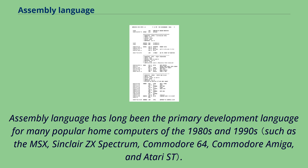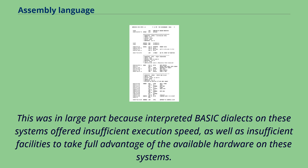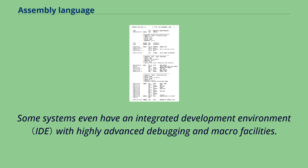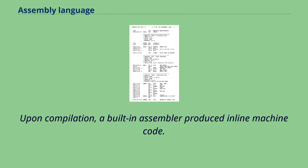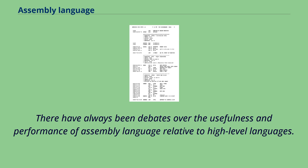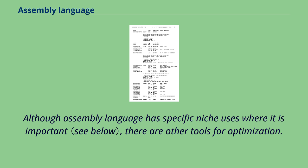Assembly language has long been the primary development language for many popular home computers of the 1980s and 1990s. This was in large part because interpreted BASIC dialects on these systems offered insufficient execution speed, as well as insufficient facilities to take full advantage of the available hardware. Some systems even have an integrated development environment with highly advanced debugging and macro facilities. Some compilers available for the RadioShack TRS-80 and its successors had the capability to combine inline assembly source with high-level program statements; upon compilation, a built-in assembler produced inline machine code.